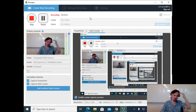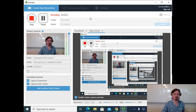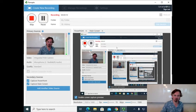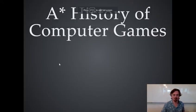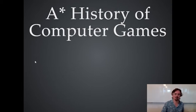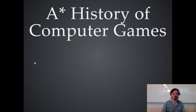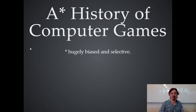Okay, we're off again. So, Lecture 1b, and this is a kind of sweep through the history, ultimately of computer games, but actually of computers themselves in some ways. A history of computer games — or as it literally says, a star history of computer games. That's not a reference to the A* route-finding algorithm, although we will be looking at that later. The star is just an asterisk to let me make a qualification that this history will be hugely biased and selective based on my own personal interests — but then, aren't all histories.